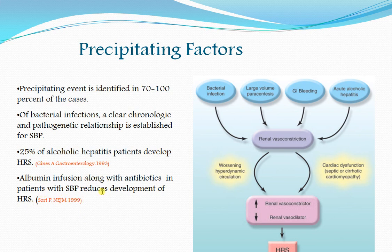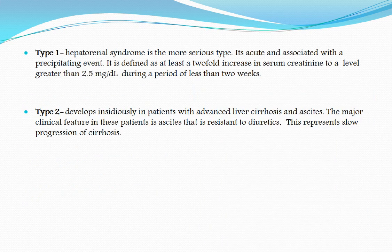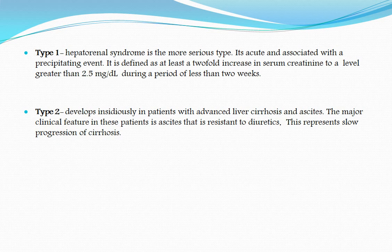Albumin infusion along with antibiotics in patients with SBP reduces the development of HRS, based on a study published in the New England Journal of Medicine in 1999. Remember, you can prevent HRS in spontaneous bacterial peritonitis by giving albumin. There are two types: Type 1 is more serious, acute, and associated with a precipitating event — defined as at least a two-fold increase in serum creatinine to greater than 2.5 mg/dL within less than two weeks. Type 2 develops insidiously in more advanced liver disease with ascites resistant to diuretics, representing slow progression of cirrhosis.